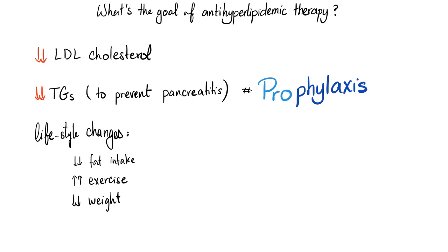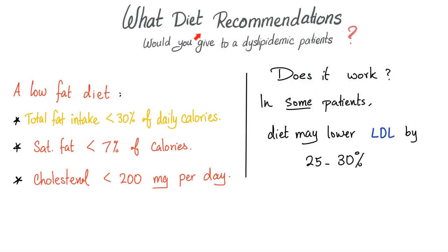When a patient has high lipids, we should decrease LDL cholesterol and decrease triglycerides. First we go with lifestyle modification: decrease fat intake, increase exercise, and decrease weight. Specifically, total fat intake should be less than 30% of daily caloric intake, saturated fat less than 7% of calories, and cholesterol less than 200 milligrams per day. In some patients, diet may lower LDL by 25 to 30%, which is significant.